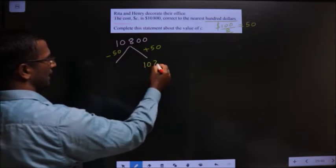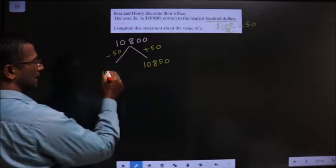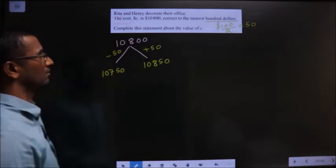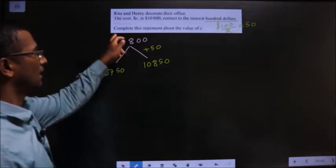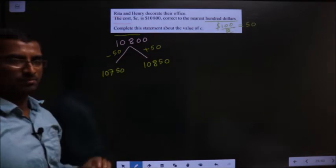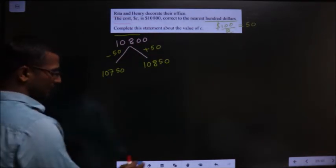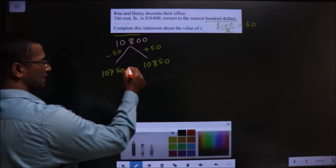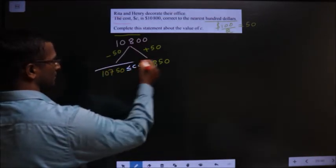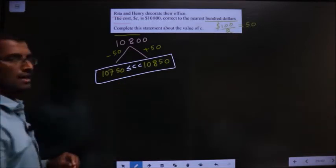So once I add, I get 10,850, and once I subtract, I get 10,750. Now complete this statement about the value of C. Complete the statement means this: this less than or equal to C less than this. So this is the answer.